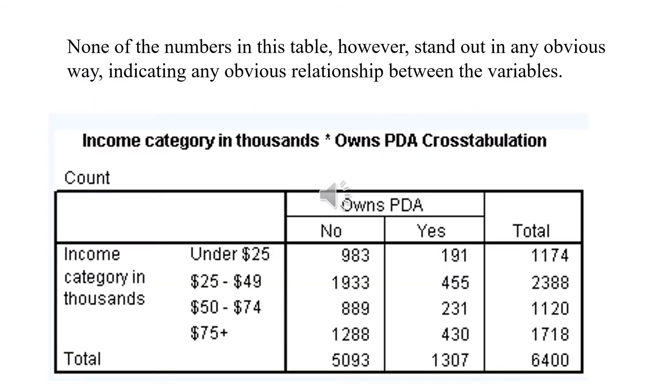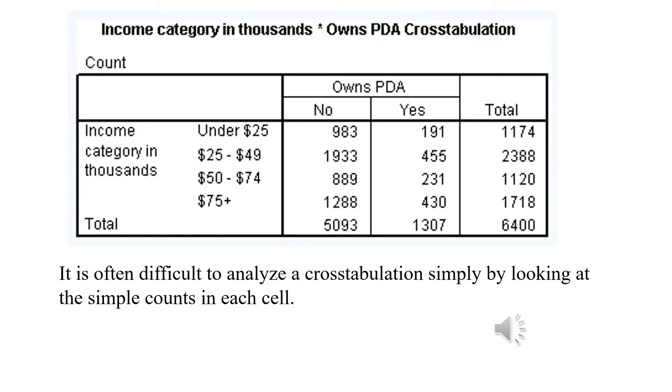It's quite clear that none of these numbers can give us any indication or any obvious result about the relationship between the variables. It is often difficult to analyze the cross-tabulation content simply by looking at the numbers in each cell.